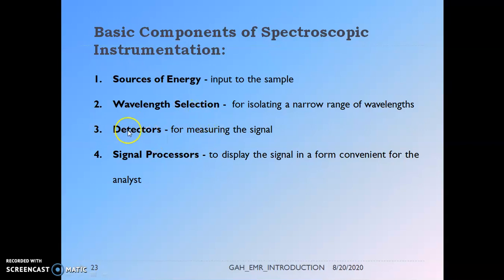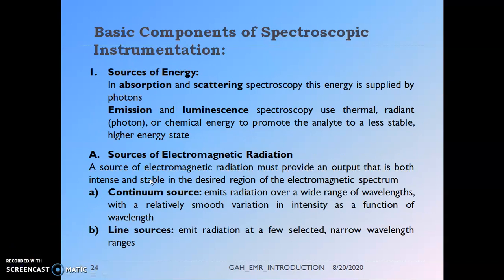Detectors measure the signal coming out of the sample cell, pursuing those signals and converting them into electronic signals. Signal processors take the electrical energy and put it into a convenient form for observation and analysis. In absorption and scattering spectroscopy, energy is supplied by photons; in emission and luminescence spectroscopy, thermal, radiant, or chemical energy is used to promote the analyte to a less stable, higher energy state. Any electromagnetic source must provide output that is both intense and stable in the desired wavelength region.